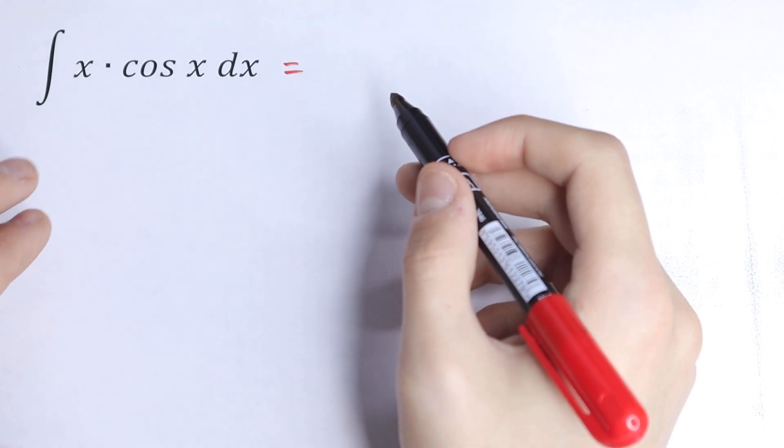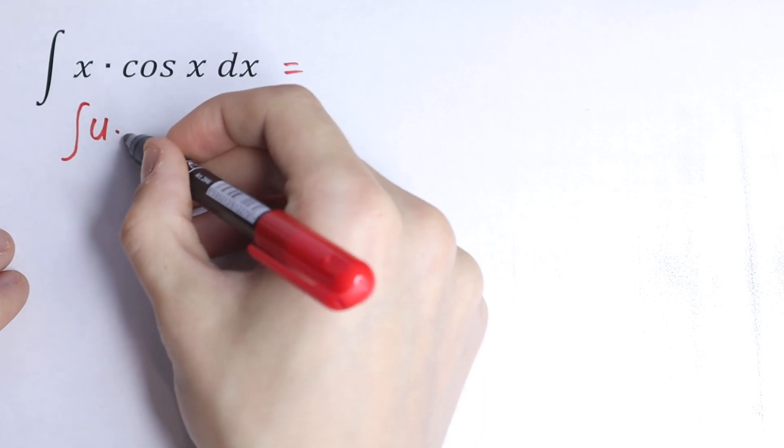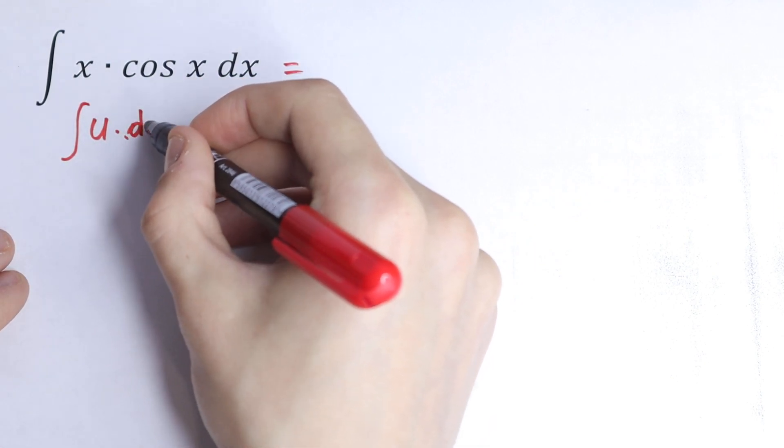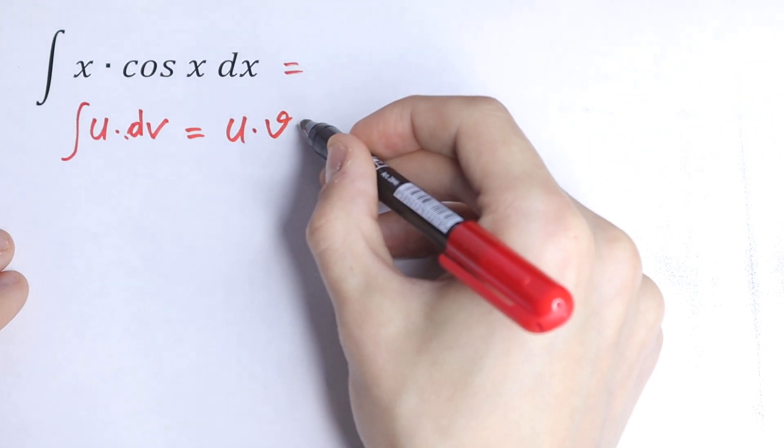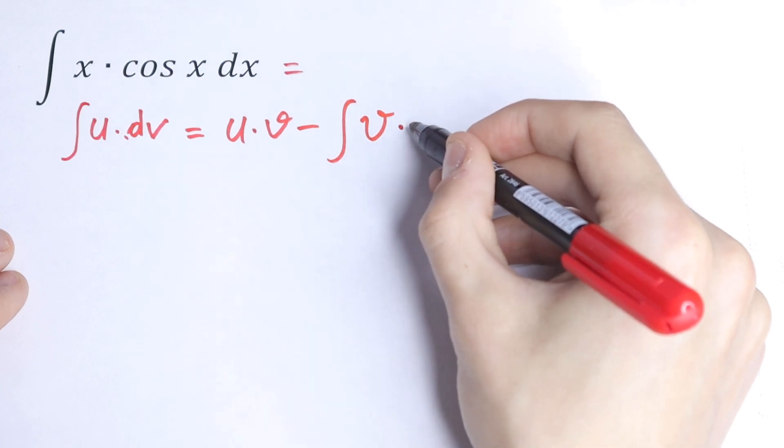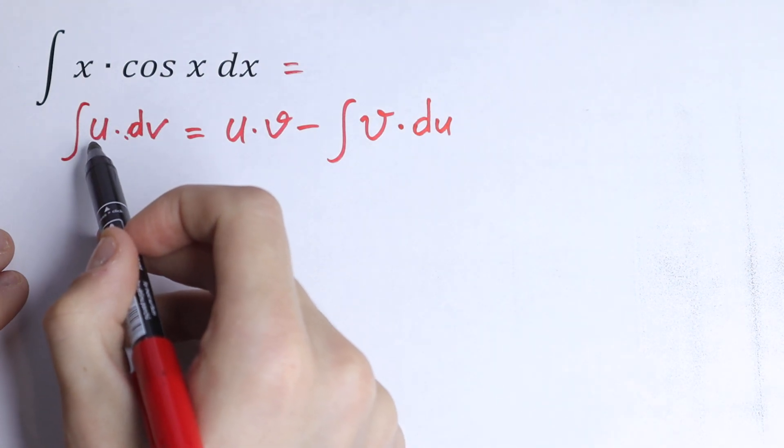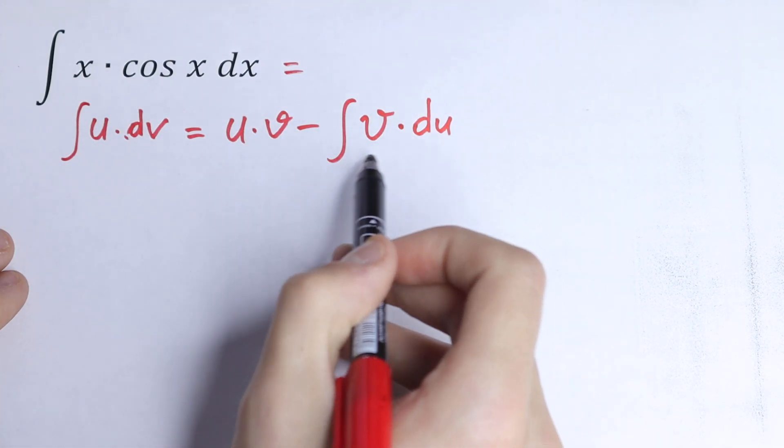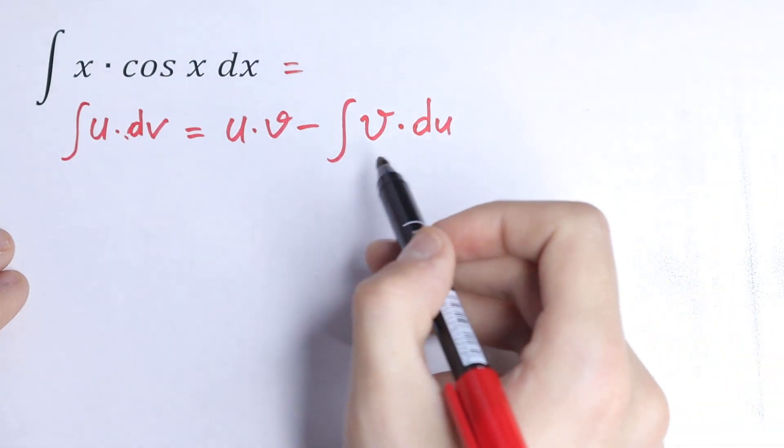I want to suggest a trick. We all know that if we have integral of u times dv, we can write this as u times v minus integral v times du. So if we express this integral as u times dv and find our derivative and find the integral, we can calculate this integral.